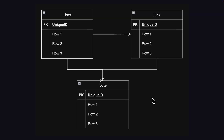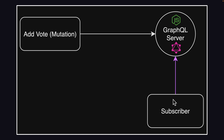Then we're going to take a look at how to extend our application functionality by adding a vote feature. At this current moment, we have user and link tables, where a user can have many links and each link can only have one user. However, if we're going to introduce the vote feature, each user can have many votes and each link can have many votes as well — basically a many-to-many relationship using the vote table. Then we're going to add the subscription to the vote feature as well, so every time a new vote is created, a subscriber will be notified.